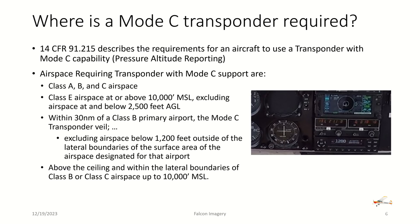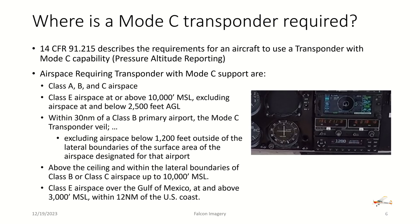Also required: above the ceiling and within the lateral boundaries of Class Bravo or Charlie airspace up to 10,000 feet MSL, and Class E airspace over the Gulf of Mexico at and above 3,000 feet MSL within 12 nautical miles of the U.S. coast.